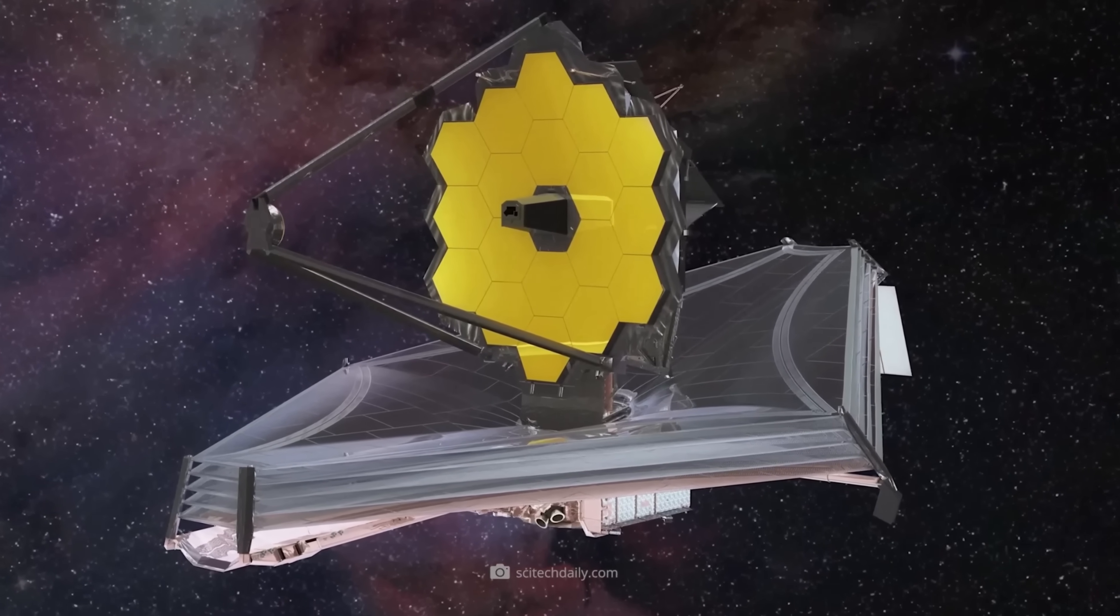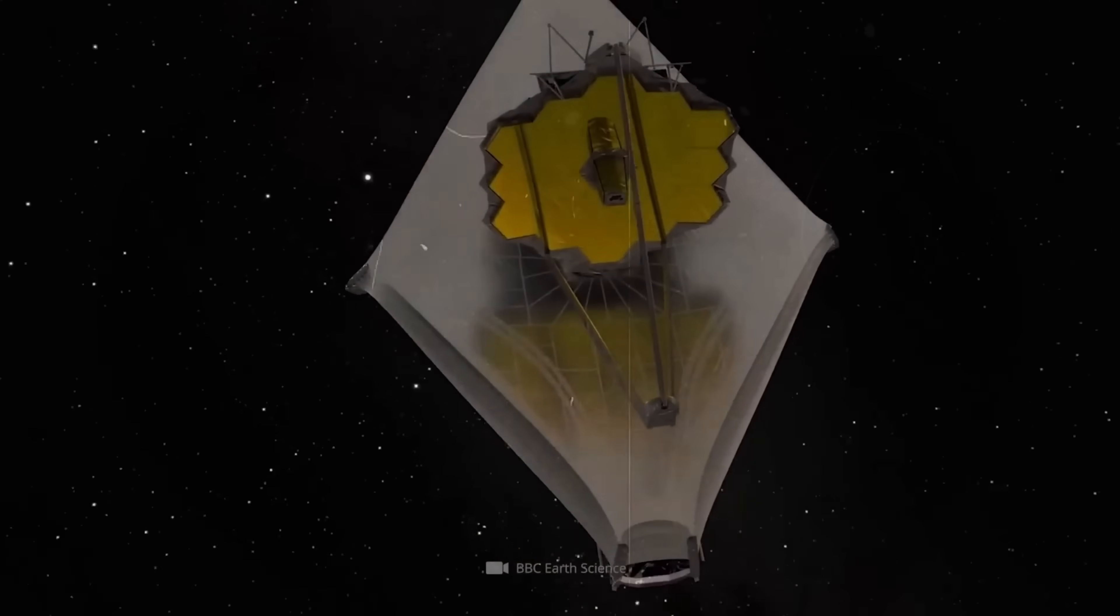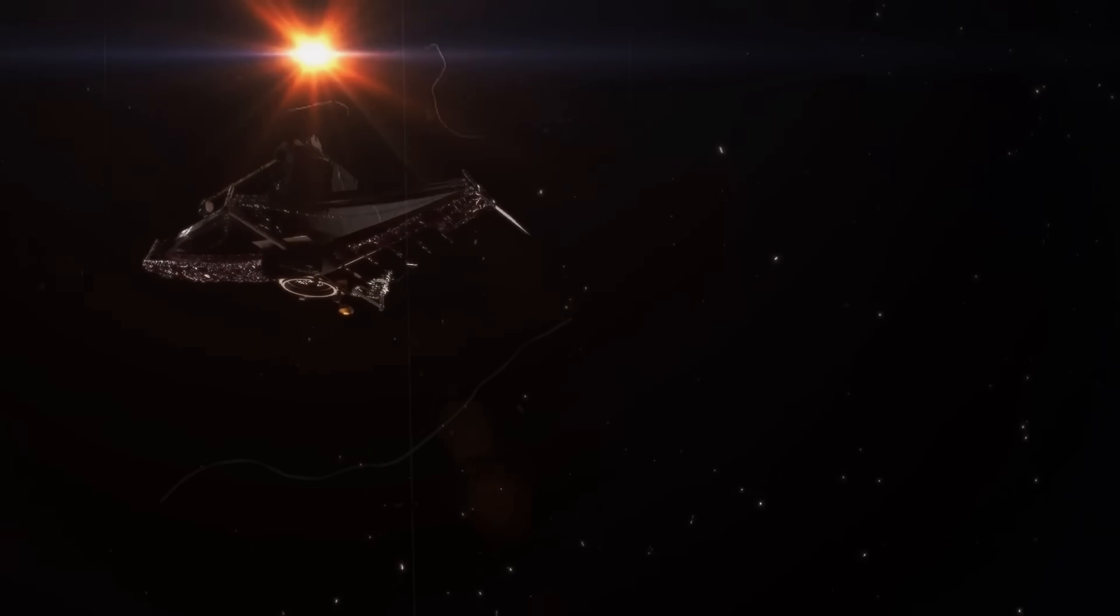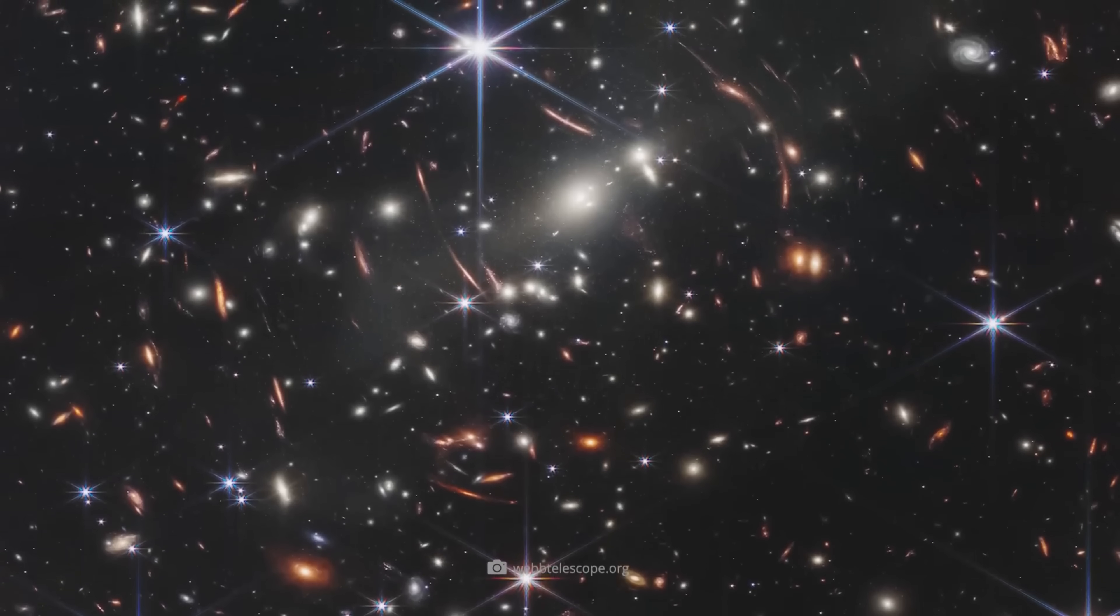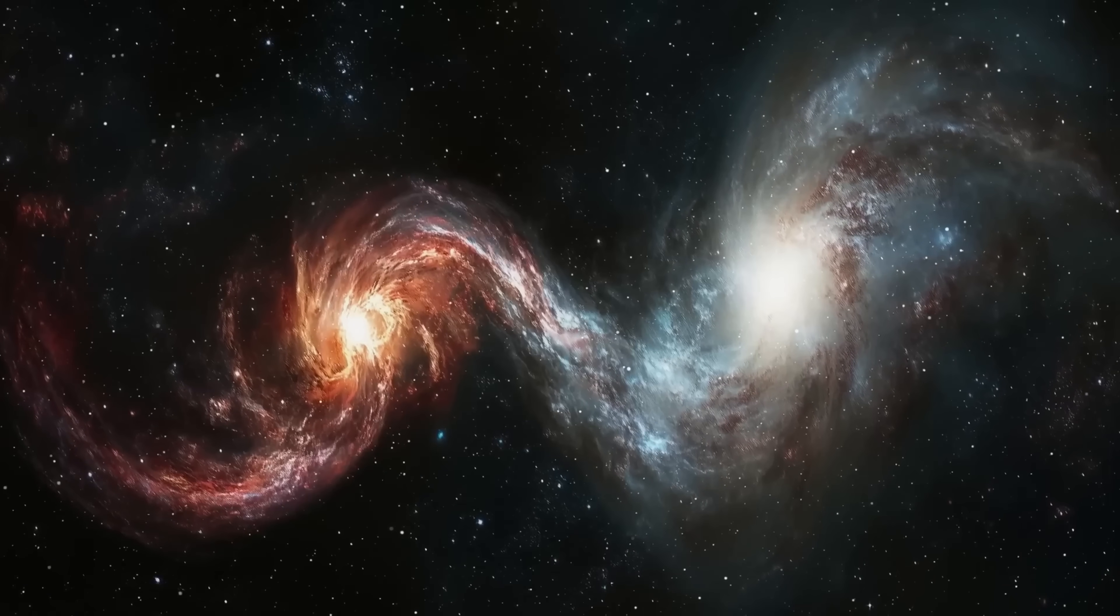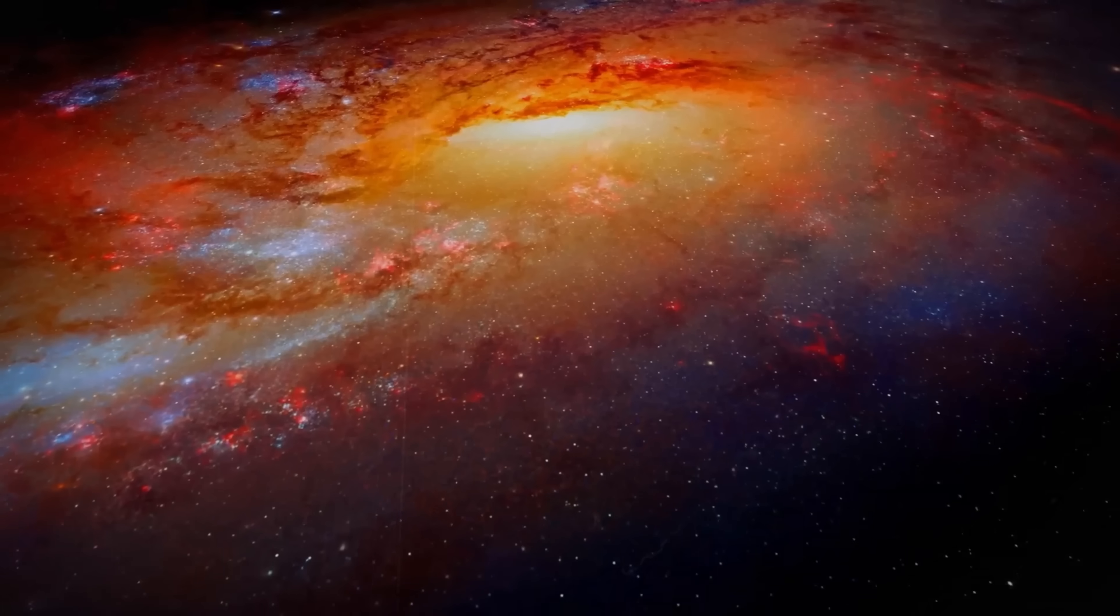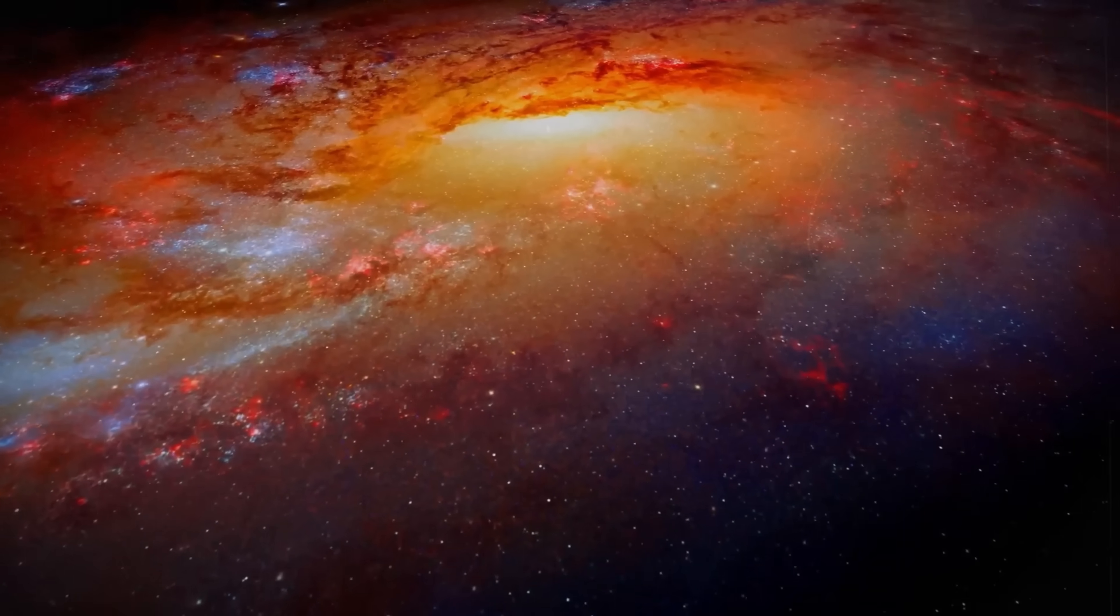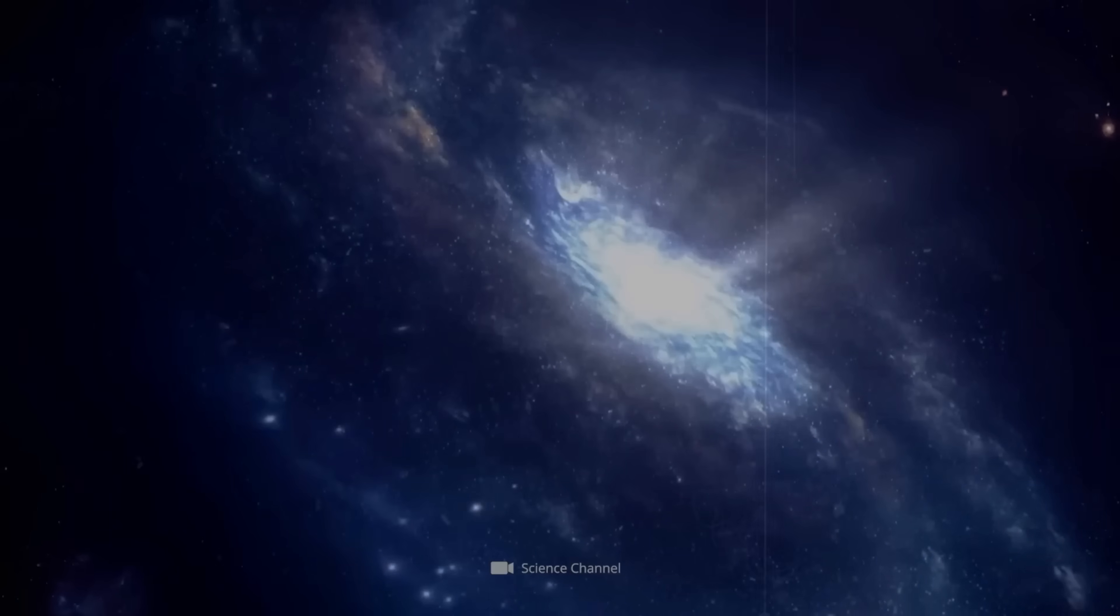Since its deployment, the James Webb Space Telescope has been unraveling the mysteries of the early universe. Among its most astonishing discoveries are mature, massive galaxies that seem far too evolved for their place in cosmic history. These galaxies, appearing fully structured at an impossibly early stage, directly challenge our fundamental understanding of how galaxies form and evolve.